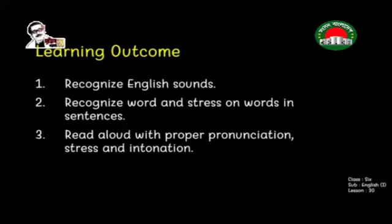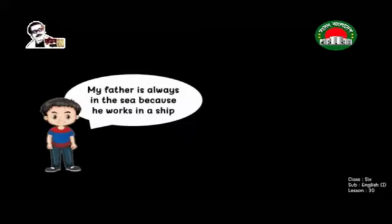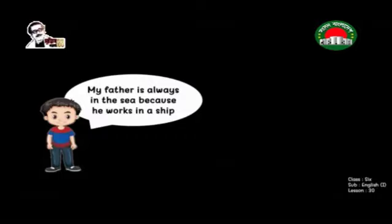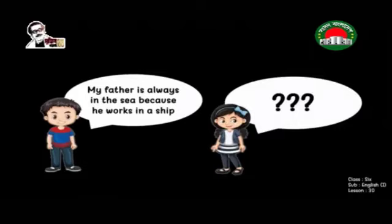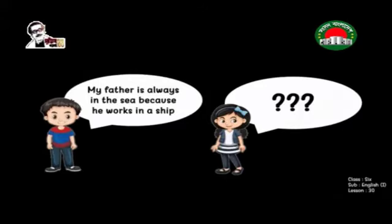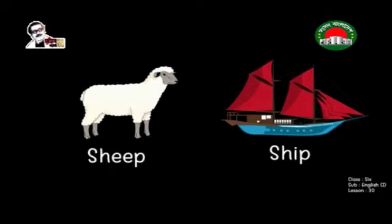For example, Onik is trying to say: 'My father is always in the sea because he works in a ship.' But if he says it incorrectly — 'My father is always in the sea because he works in a sheep' — this will make no sense, because sheep means an animal, not a vessel.